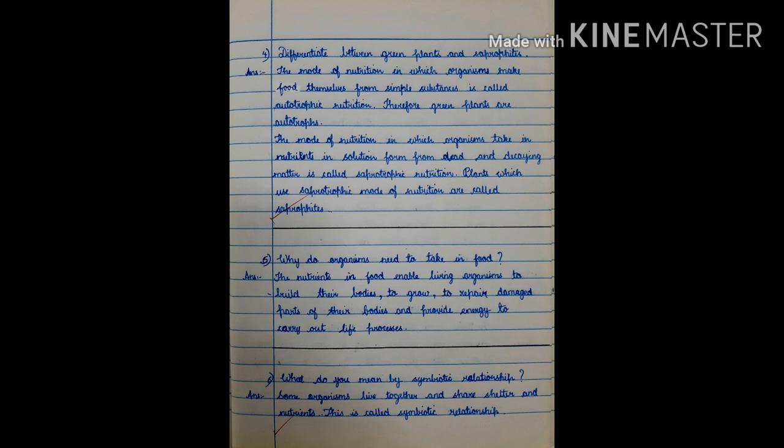Sixth question. What do you mean by symbiotic relationship? Answer. Some organisms live together and share shelter and nutrients. This is called symbiotic relationship. Example. Lichens. Fungi. Algae.